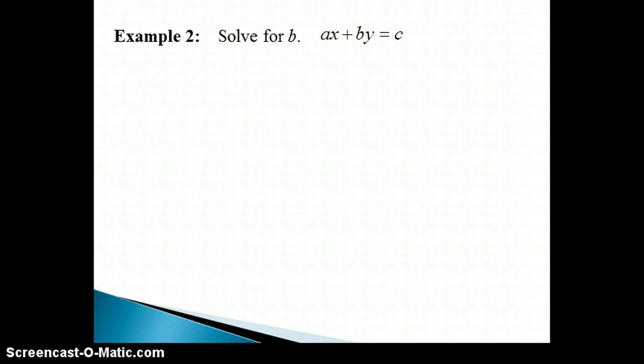It might help to think of the steps we used for solving a linear equation in one variable. Since both sides are simplified, we would first move the variable terms to one side. The variable term in this case is the B term, since B is the variable we are solving for.